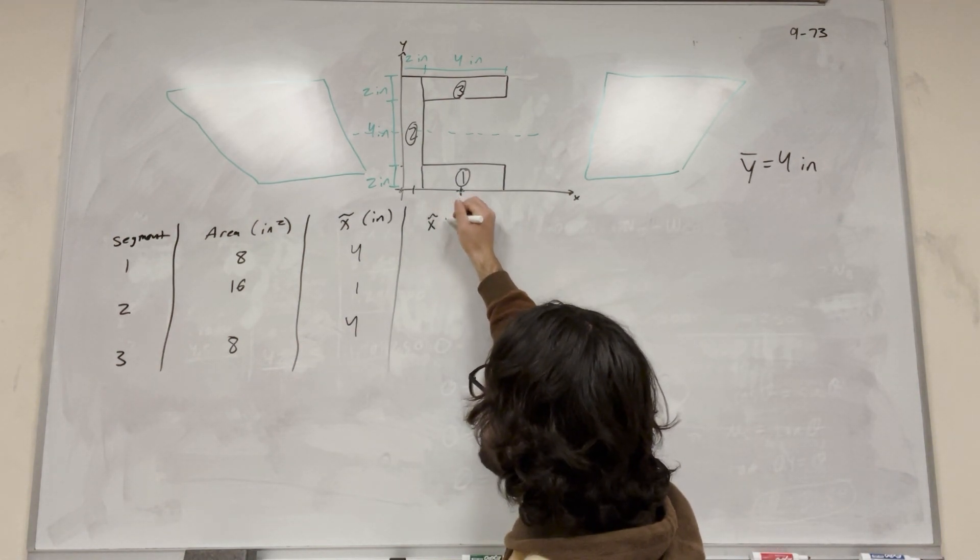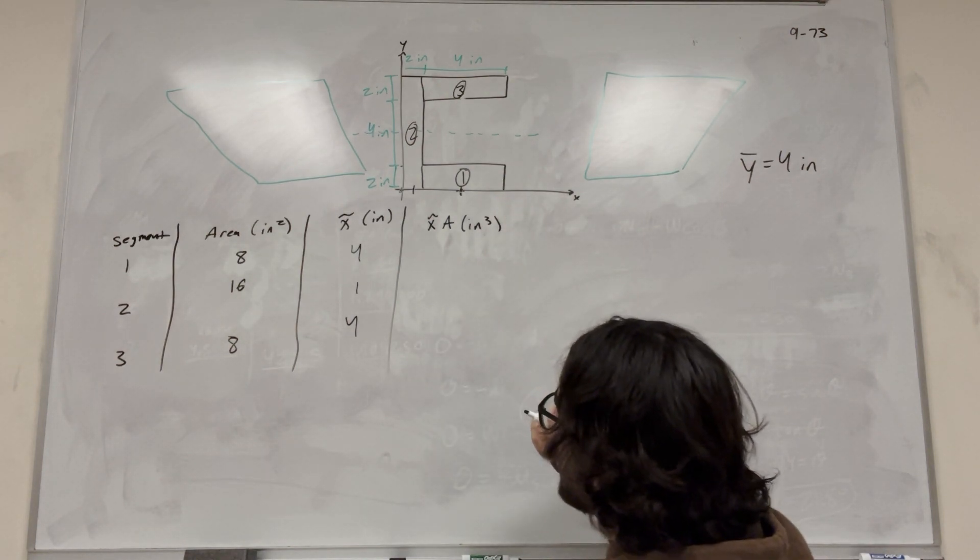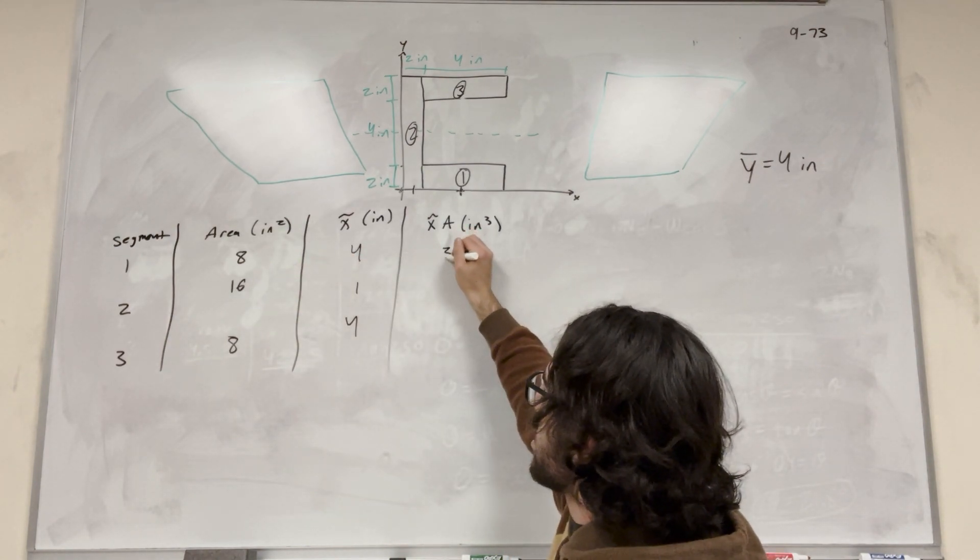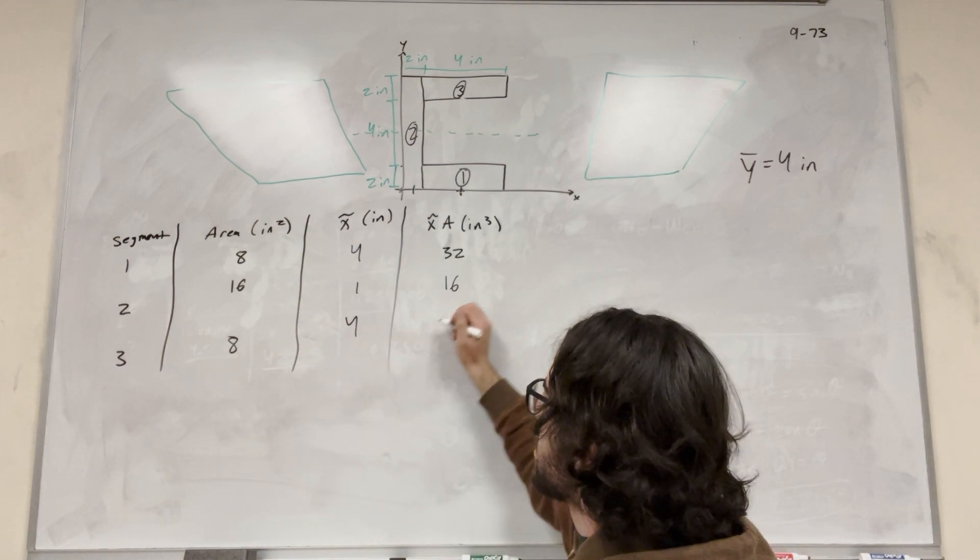So we don't even have to plug it into our table here, because we already figured it out pretty easily. So the last one we're going to do is x tilde times area. So this is going to be inches cubed. So what we're doing is just multiplying these two together. So four times eight, 32. One times 16, 16. Four times eight is another 32.